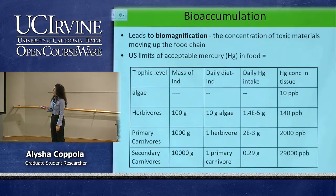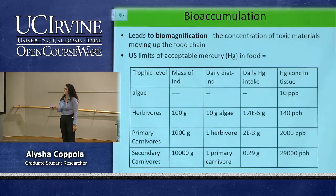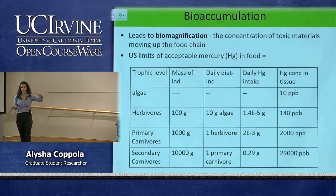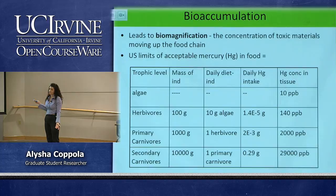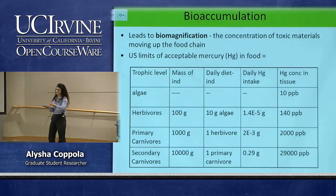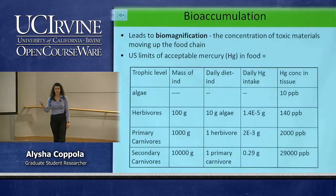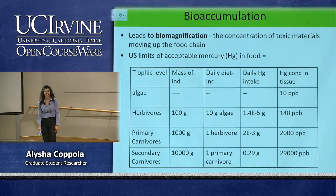Bioaccumulation leads to biomagnification, where a lower trophic level — for instance algae — accumulates mercury at 10 parts per billion, and higher trophic levels like herbivores eat the algae and accumulate an even greater amount. The concentration increases more and more as you move higher up the trophic level. A secondary carnivore can contain concentrations of 29,000 parts per billion. Does anyone know what the US limit for mercury in food is?